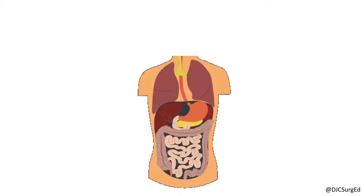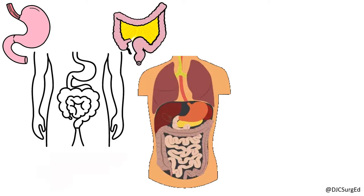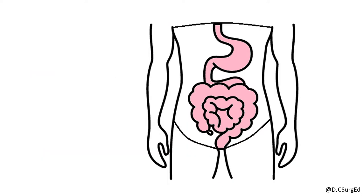Primary malignant neoplasms of the peritoneum are rare, as most malignant neoplasms are metastases originating from carcinomas of the GI tract — especially the stomach, colon, and pancreas — or the genitourinary tract, particularly epithelial ovarian tumors. When metastatic cancer deposits diffusely coat the visceral and parietal peritoneum, these peritoneal metastases are referred to as carcinomatosis.